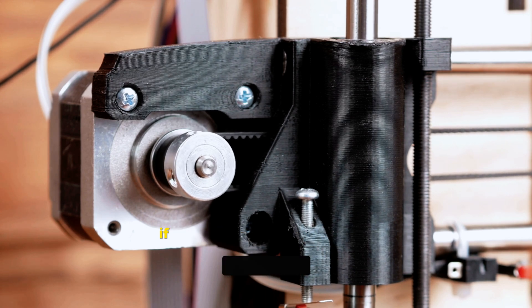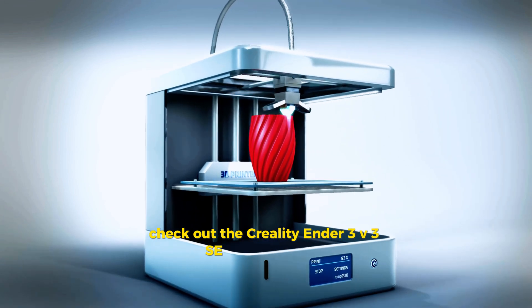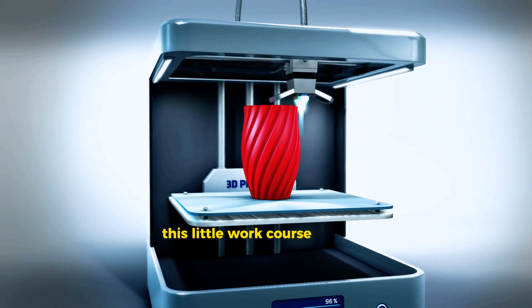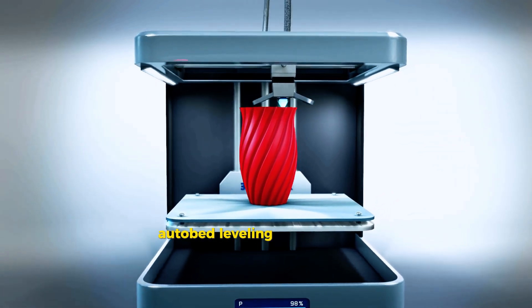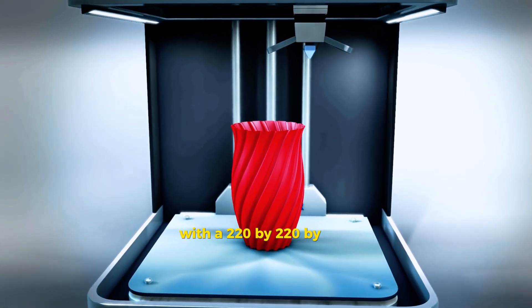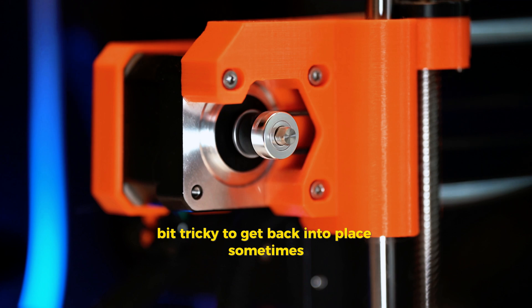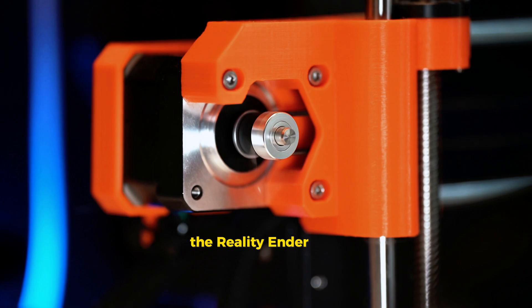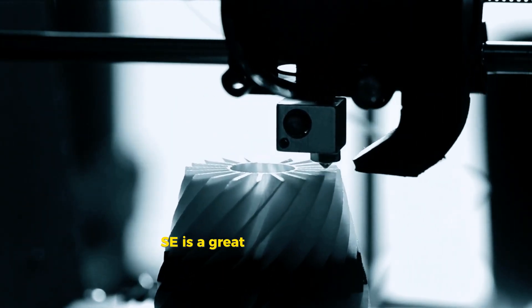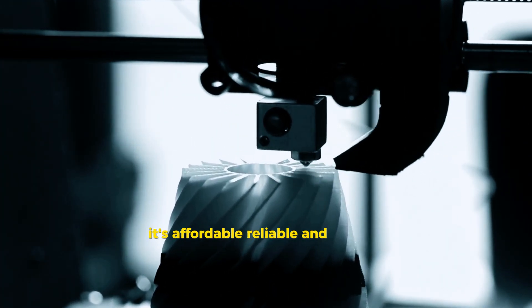If you're looking for something even more affordable, check out the Creality Ender 3 V3 SE for under $200. This little workhorse offers a reliable auto bed leveling system and is super quiet. With a 220 by 220 by 250 millimeter build volume, it can handle most projects with ease. The magnetic print bed is a bit tricky to get back into place sometimes, but overall it's a solid, no-fuss three-dimensional printer. The Creality Ender 3 V3 SE is a great entry-level printer for anyone just getting started with three-dimensional printing.